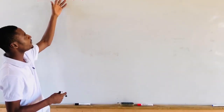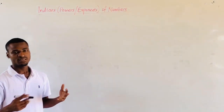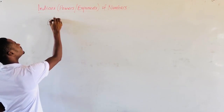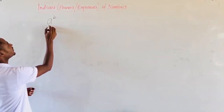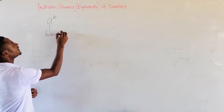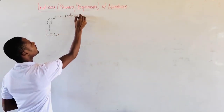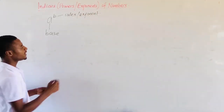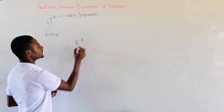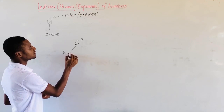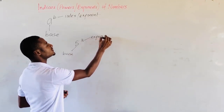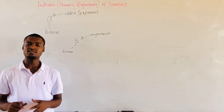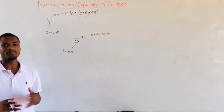Indices, which are also called powers or exponents of numbers. In general, if any number is written in the form A raised to the power B, then A is called the base, and B is called the index or exponent — you can also call it power. For example, if we have a number written as 5 raised to the power 3, then 5 is the base and 3 is the exponent. Today we will look at the basic laws and properties of indices and how we can apply them.